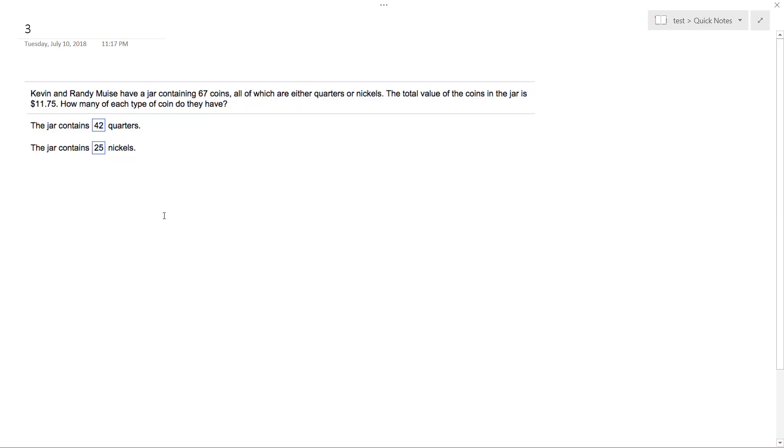All right, so Kevin and Randy have a jar containing 67 coins, all of which are either quarters or nickels. The total value of the coins in the jar is $11.75. How many of each type do they have?